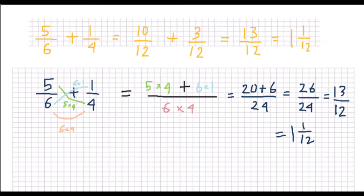There is another method which is a sort of cross multiplication. First, you multiply the numerator of the first fraction by the denominator of the second fraction — in this case, 5 times 4. Second, you multiply the numerator of the second fraction by the denominator of the first fraction — in this case, 6 times 1. Third, you multiply the denominators of the two fractions — in this case, 6 times 4. The answer will be the same, but using this method you may end up with larger numbers which you can simplify later.